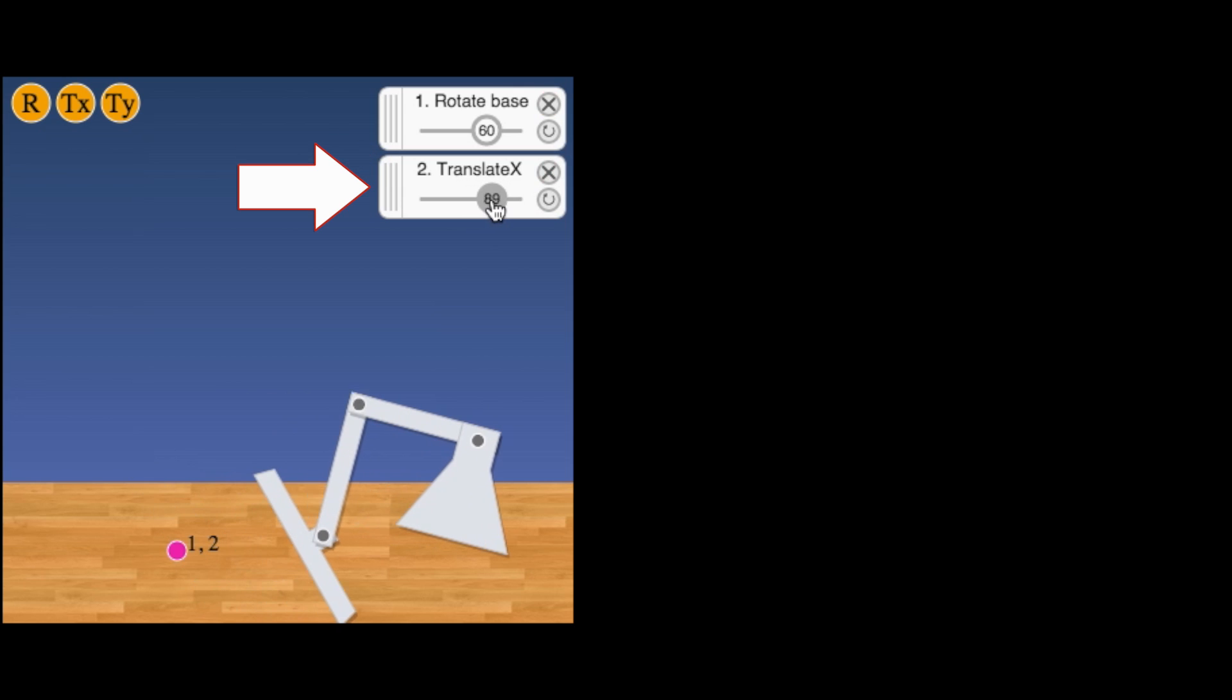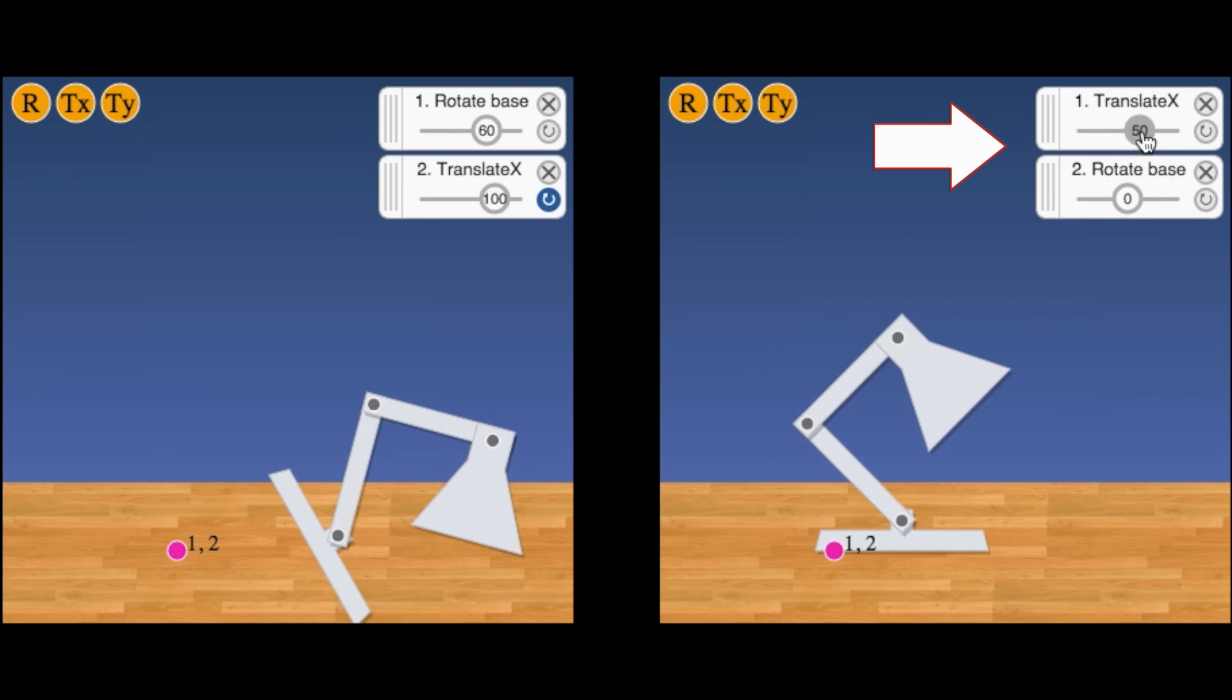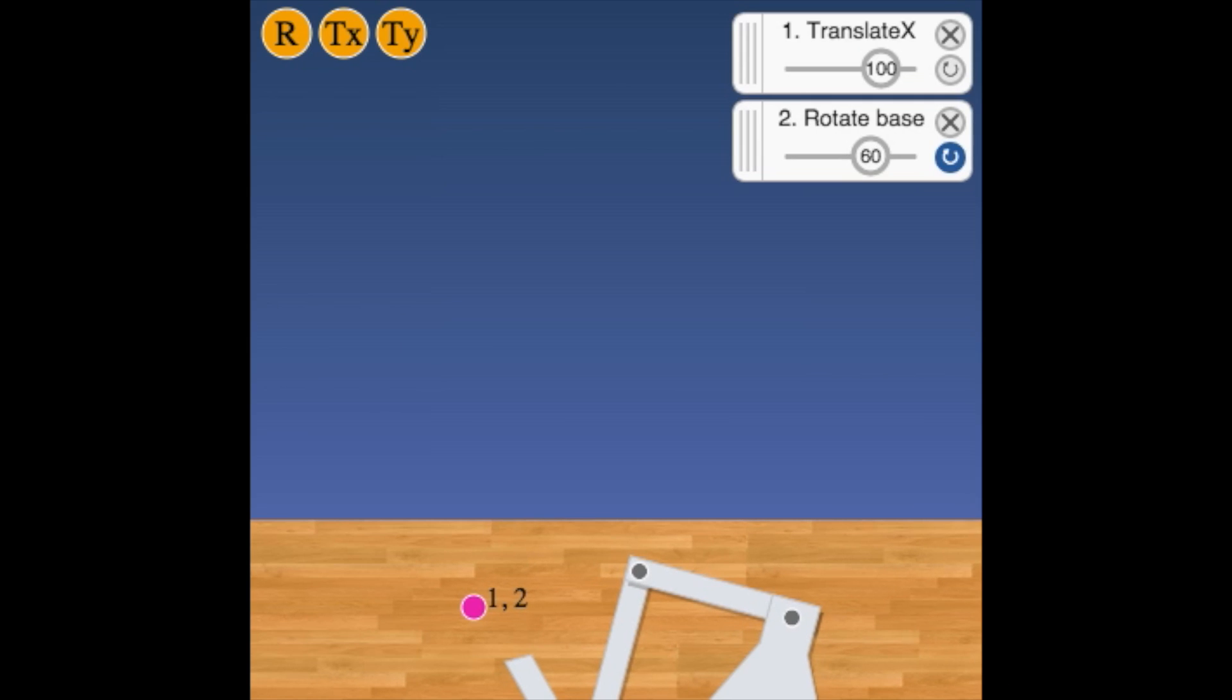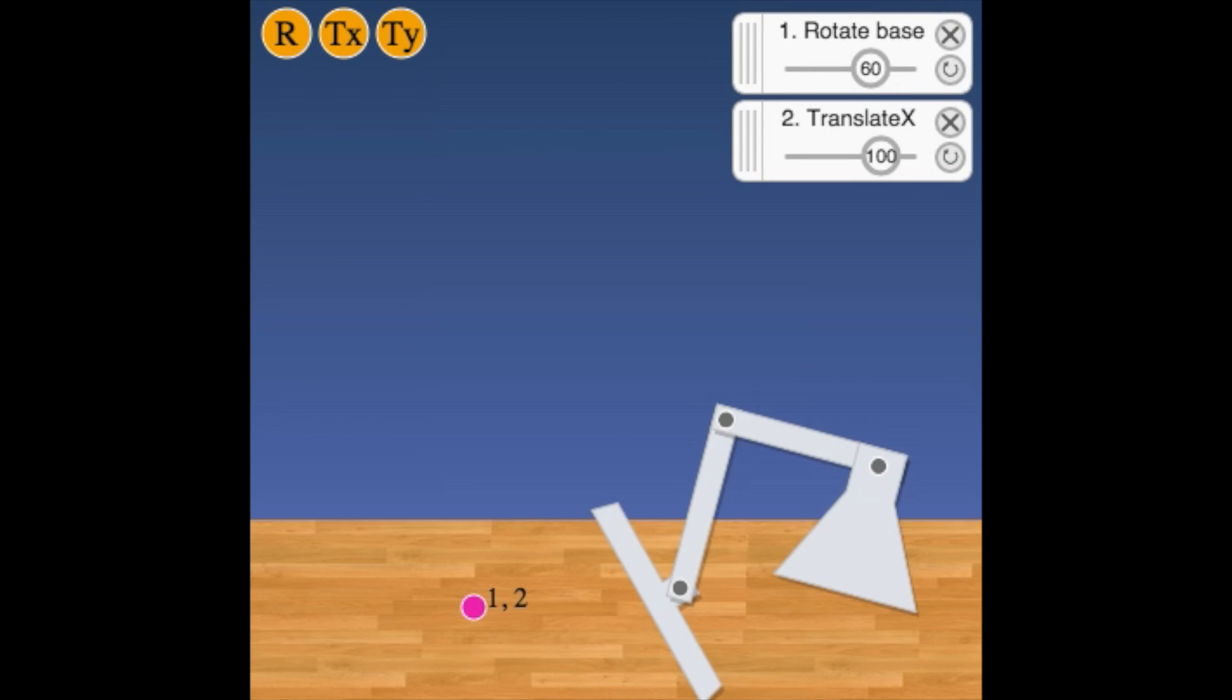If we rotate before we translate we get a different effect than if translate and then rotate. Notice that we can arrange the order of these deformers by clicking and dragging like this and the order in which they operate flows in this direction.